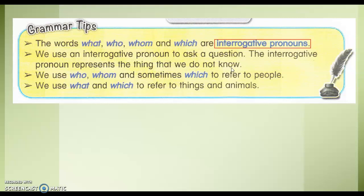那为什么我们用疑问词呢？因为有东西是我们不知道的，所以我们用这些疑问词来代替。 We use who, whom, and sometimes which to refer to people. 那我们用who，whom，还有which来代表人。 We use what and which to refer to things and animals. 那what和which呢，也是用来指东西还有动物。